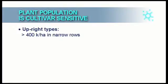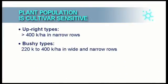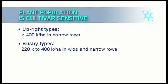Cultivars with an upright structure can deal better with plant densities higher than 400,000 plants per hectare in narrow rows than bushy types. On the other hand, bushy types can perform well in narrow as well as wide row widths at plant densities below 400,000, even as low as 220,000 plants per hectare.